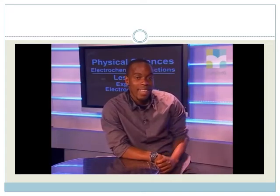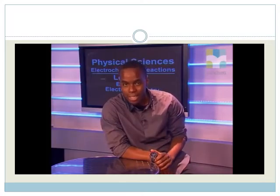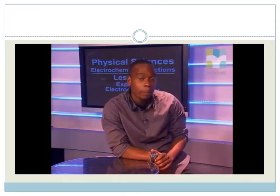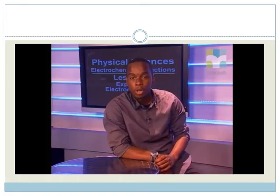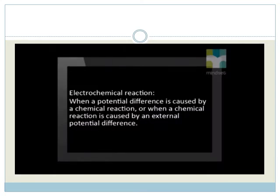From this, we can say that an electrochemical reaction is a chemical reaction that produces a potential difference and therefore a flow of electrical current, or an electrochemical reaction takes place when a chemical reaction is caused by an external potential difference.